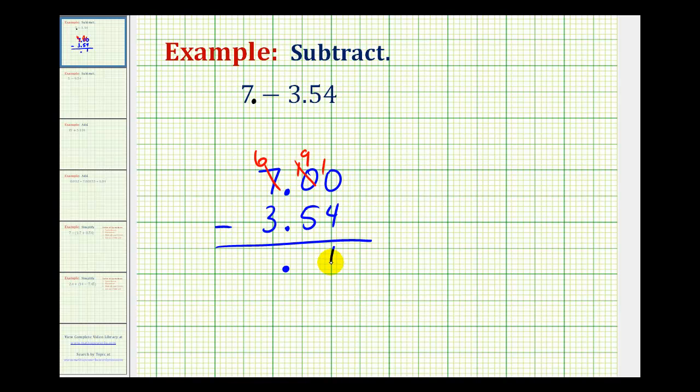So ten minus four is six, and nine minus five is four, and six minus three is three.